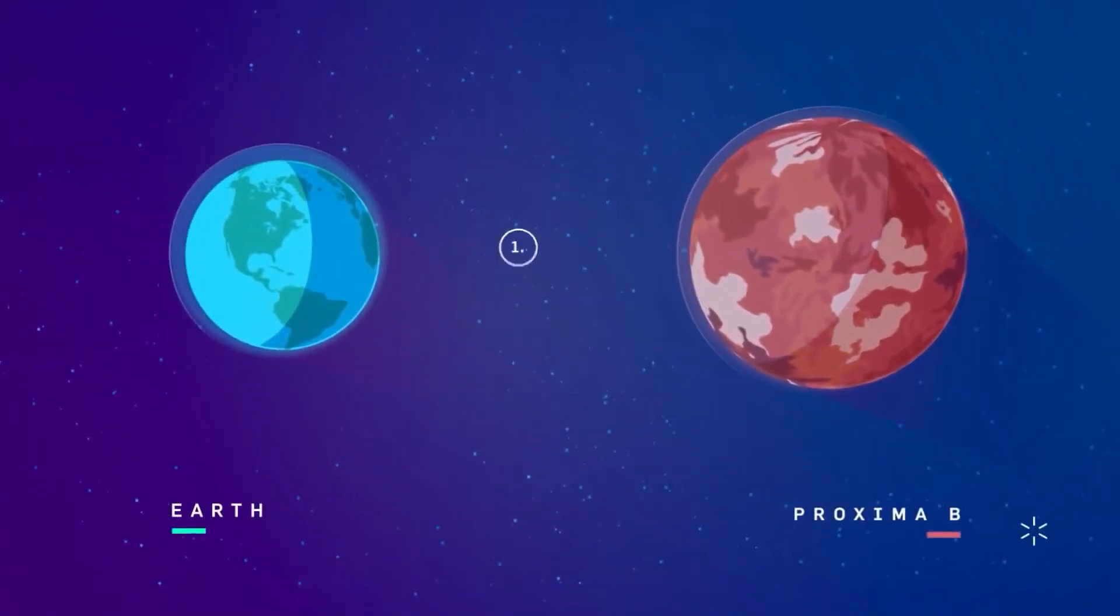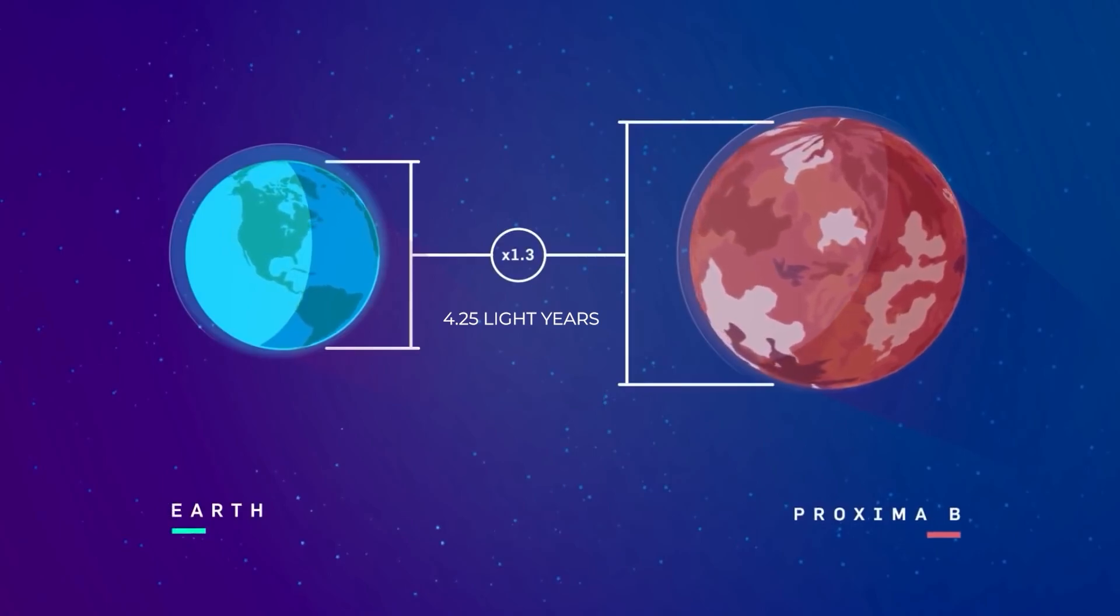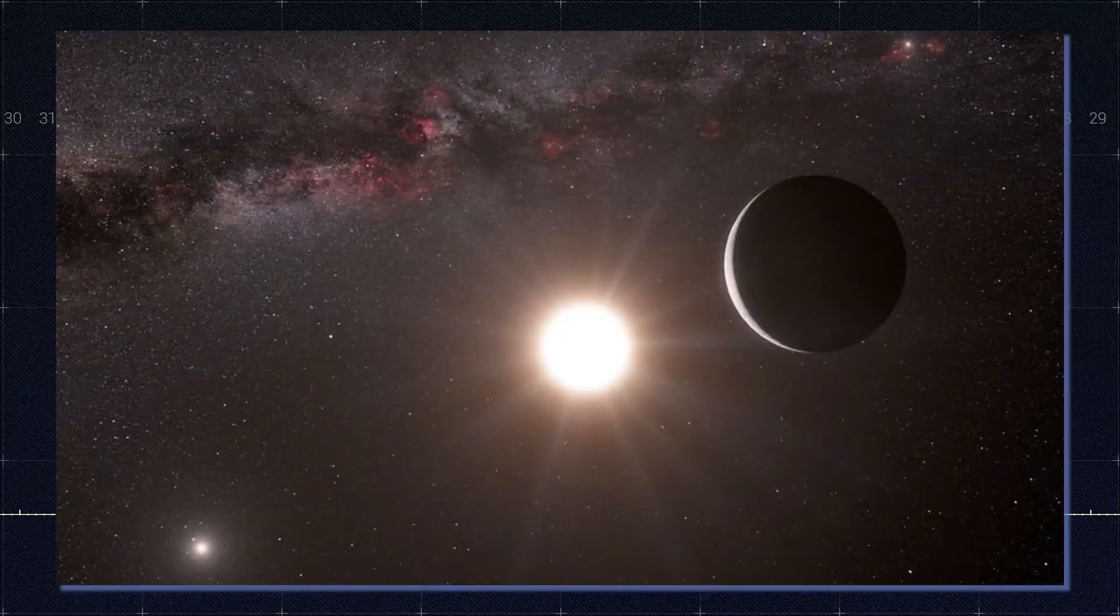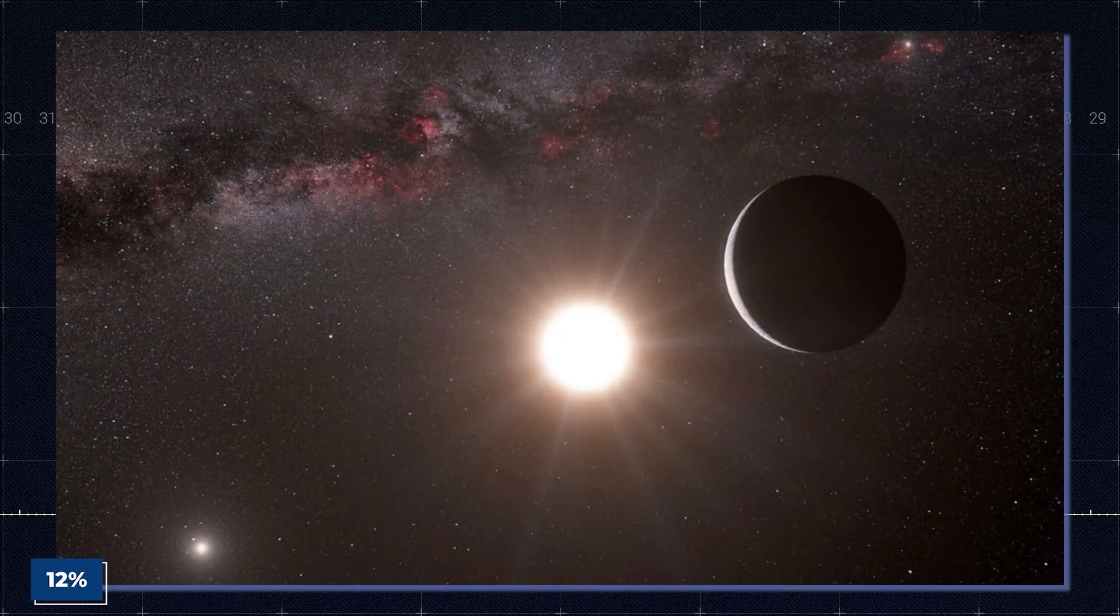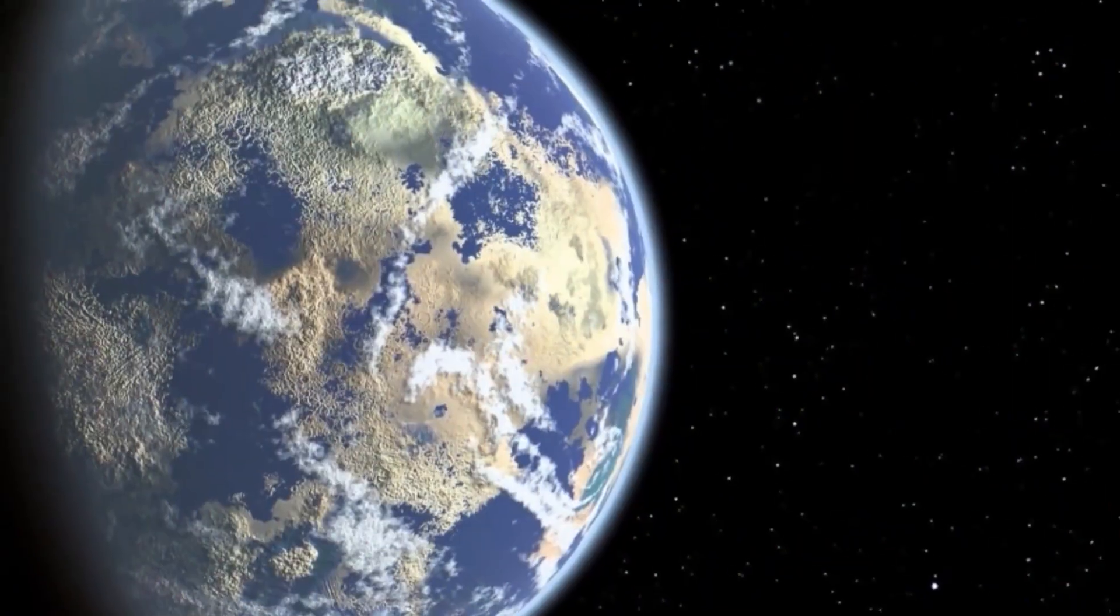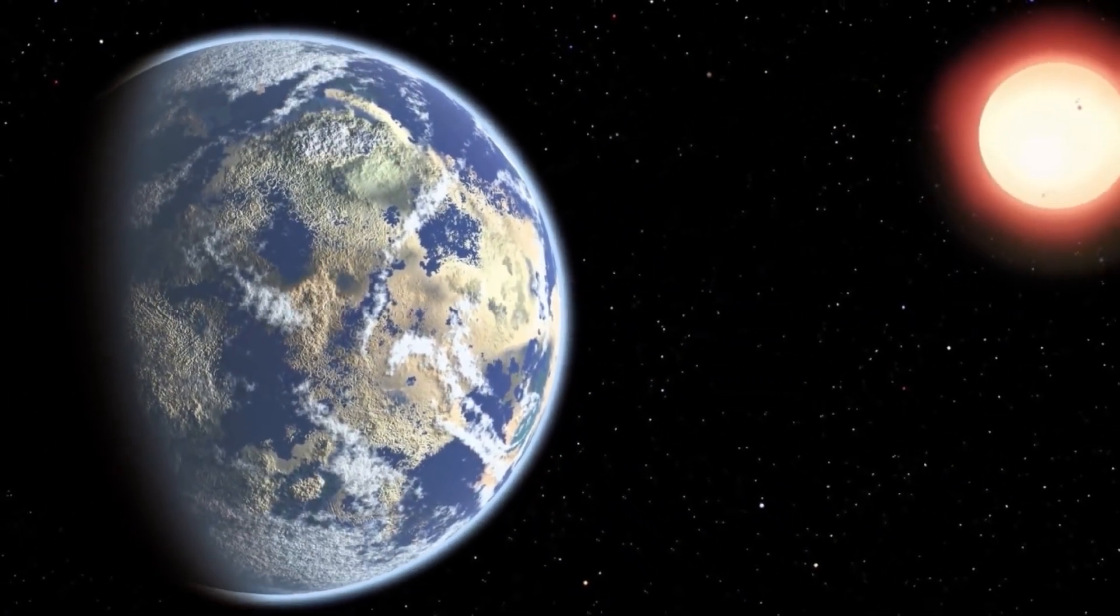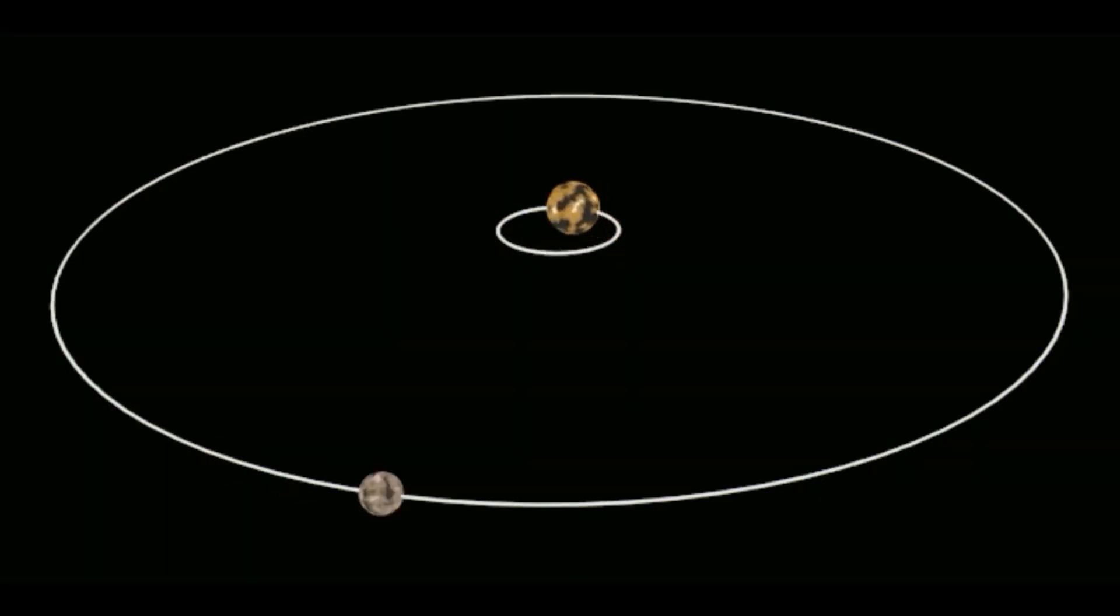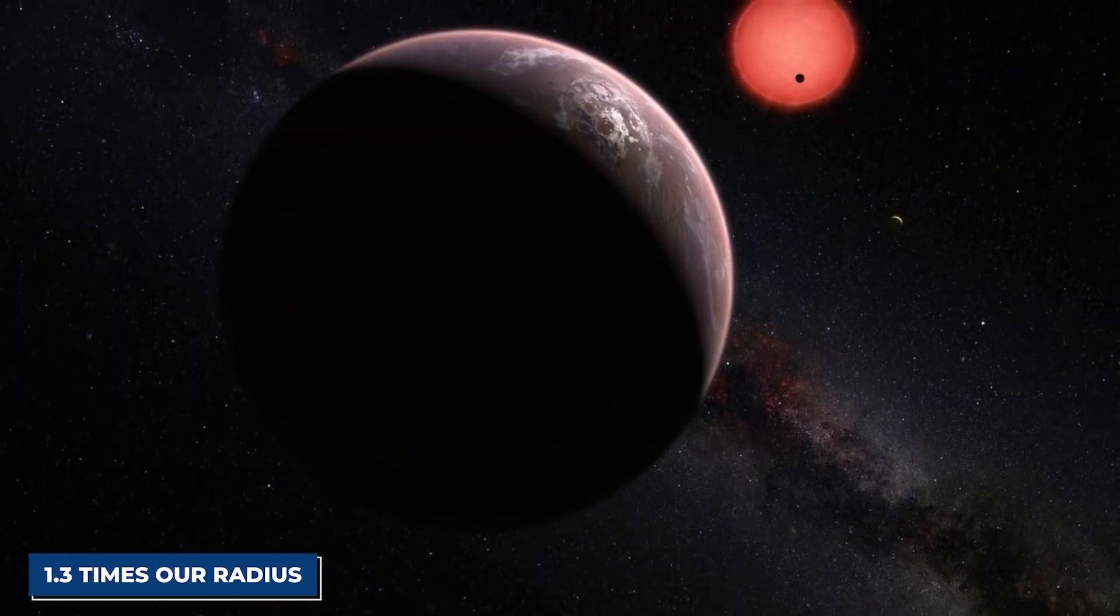Proxima b is a rocky world 4.5 light-years from Earth, in the habitable zone of the M-class red dwarf star Proxima Centauri, which is only 12% the mass of our Sun. Proxima b is larger than us, weighing roughly 1.6 Earth masses and measuring 1.3 times our radius.